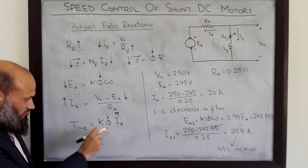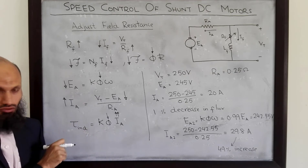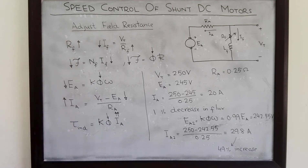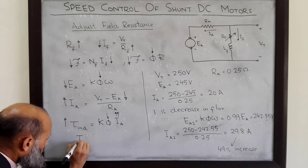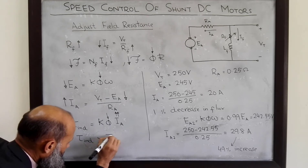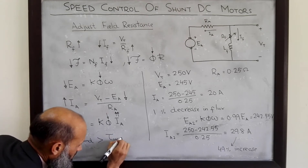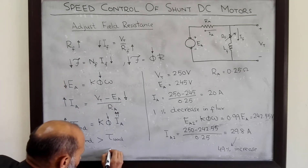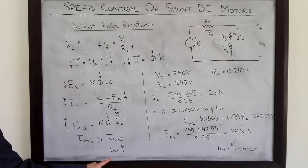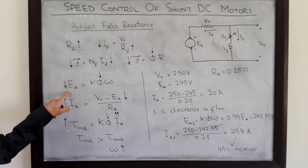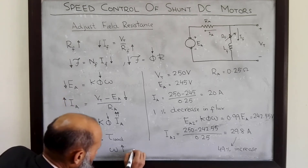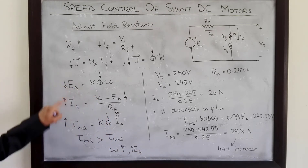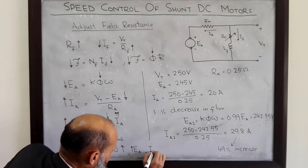In the expression for induced torque, if there is a decrease in flux, there is a large increase in armature current, so the net effect is an increase in induced torque. When the field resistor is increased, induced torque will also increase and become larger than the load torque, so the motor will gain speed. An increase in ω will then result in an increase in EA.